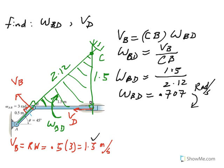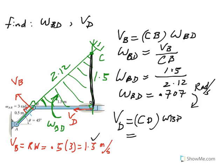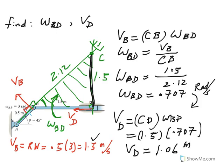Now at this instant we can find the velocity of any point, since we know omega and we know where the instantaneous center is. Velocity of D equals R times omega, where R is from C to D. So it's CD times omega BD. CD is 1.5 and omega BD is 0.707, so velocity of D is about 1.06 meters per second. The motion of D is confined within that cylinder, making it horizontal and to the left.